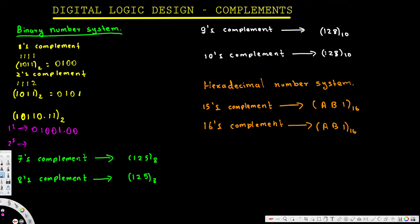To find the two's complement, the easiest way is to add one to the last digit of the one's complement. So here we have zero-one-zero-zero-one point zero — instead of this zero we are going to have one. We added plus one, and that's how we find the two's complement.